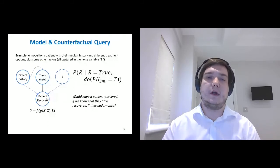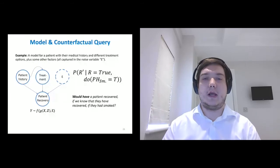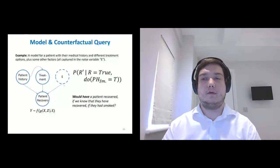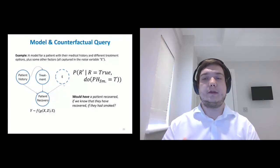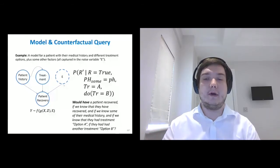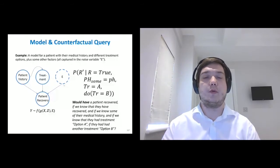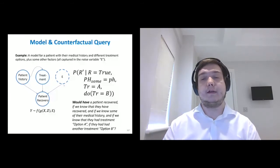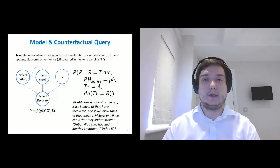For example, we might be interested in a model where there's patient history and treatment and some noise variables, and patient recovery depends on all of this, and we're interested what would have happened, would have a patient recovered if we know that they have recovered, but if they had smoked, if we intervened on that risk factor. And another example is: would have a patient recovered if we know that they have recovered, and if we know some of their medical history as part of an observational query, and if we know that they had treatment option A, but if they had had another treatment option B as part of intervention, would they have recovered? It's another example of counterfactual query for medical application.